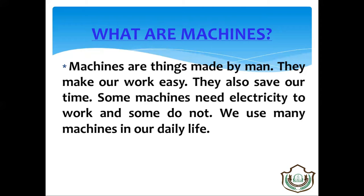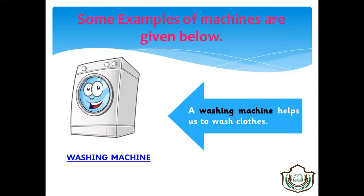We use many machines in our daily life. Some examples of machines are given below — machines that you use in daily life. First is the washing machine. A washing machine helps us to wash clothes.